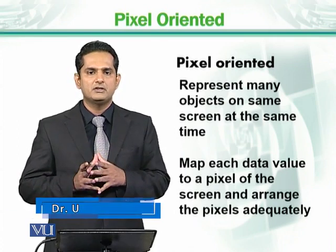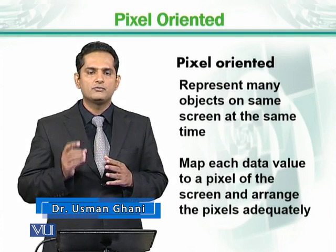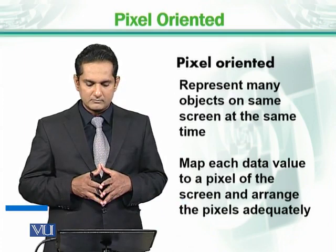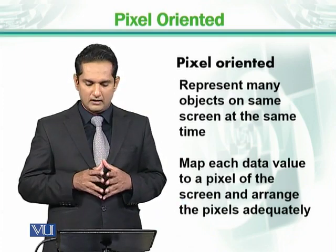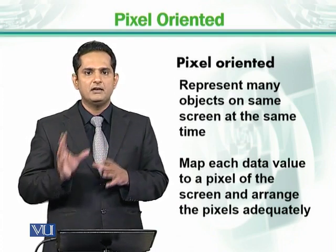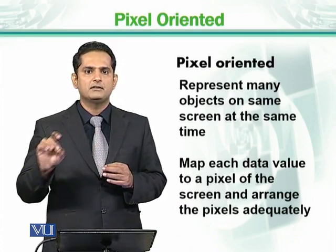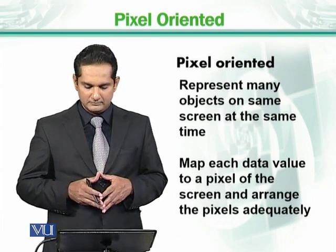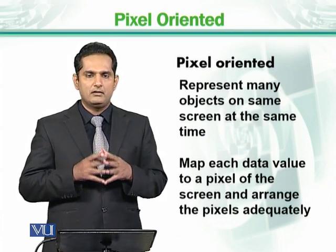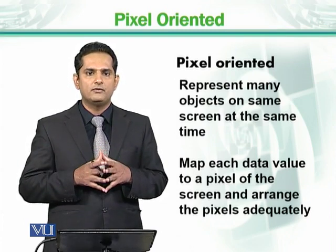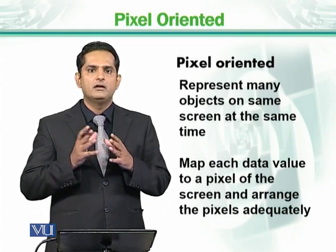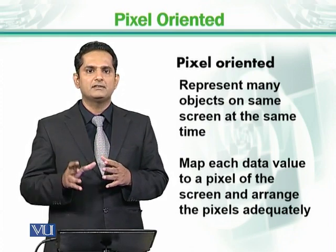That means we have an image in which there are different pixels, and every pixel represents a data object. The data values are mapped on the pixels. This is not an abrupt arrangement — we have a set of rules or methods available with which we map our data values on the pixels.